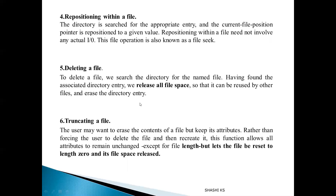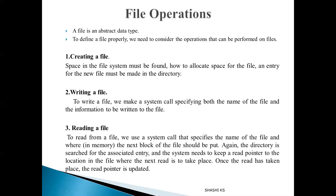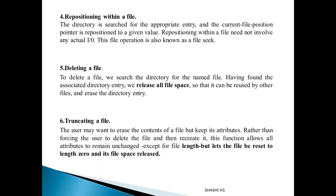The fifth operation is deleting a file: the OS searches the directory for the file, releases all space allocated to it on the disk, and deletes the directory entry. The sixth operation is truncating a file — if you want to keep the file and its attributes but not its contents, truncation resets the file to length zero, releases all allocated space, but the file continues to exist with its attributes. So the six file operations are: creation, deletion, reading, writing, repositioning, and truncating.